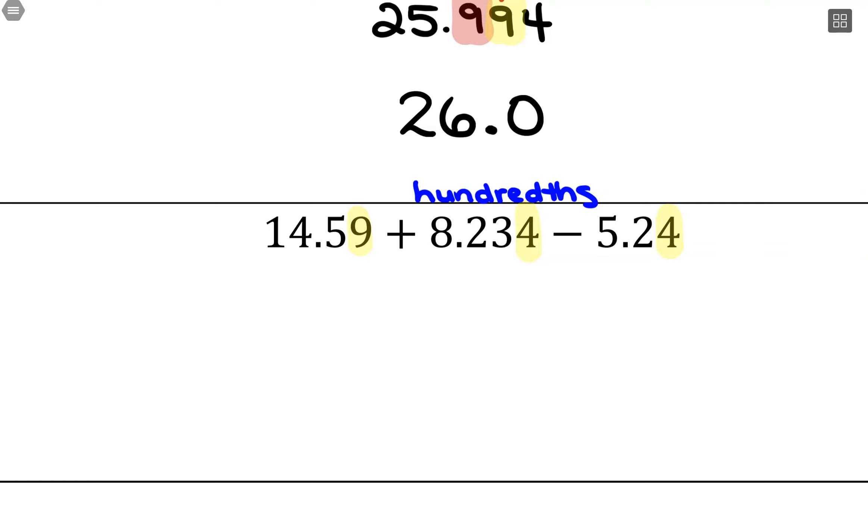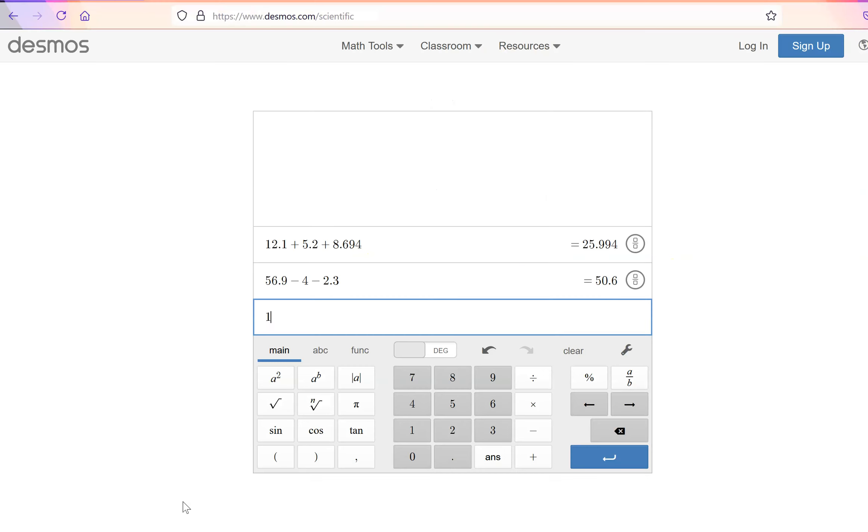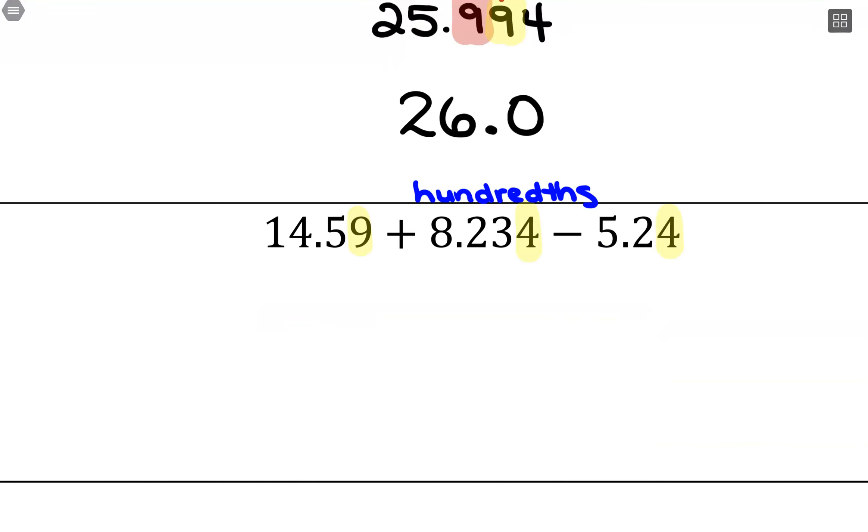With that, we'll go to our calculator: 14.59 plus 8.234 minus 5.24, so 17.584. I want to round to the hundredths place, so my rounding digit's right there. The 4 is telling me to round down, so we're going to keep that 8 as it is. So just 17.58.